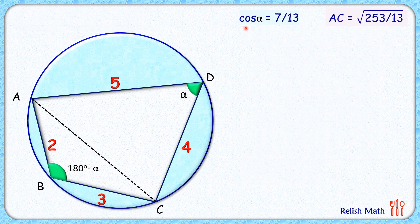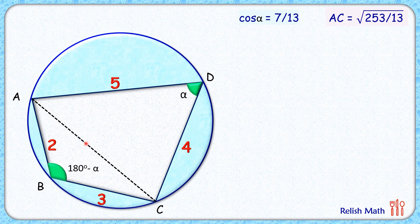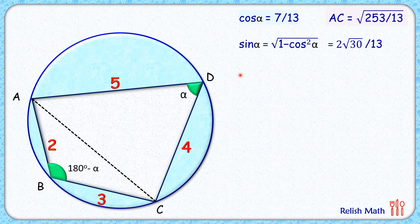Here cos alpha is known and the length of diagonal AC is known. With the help of cos alpha, we can find the value of sin alpha using this formula. Putting the value of cos alpha as 7 by 13, we'll get sin alpha as 2 root 30 upon 13.